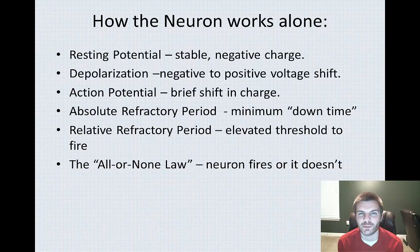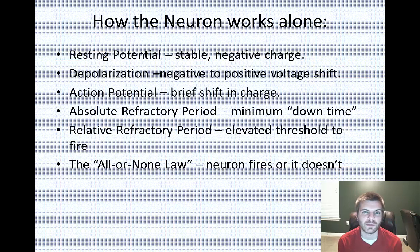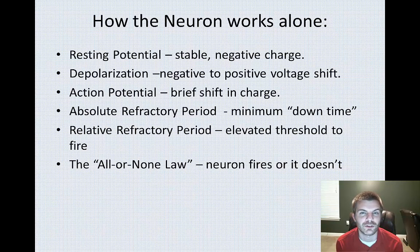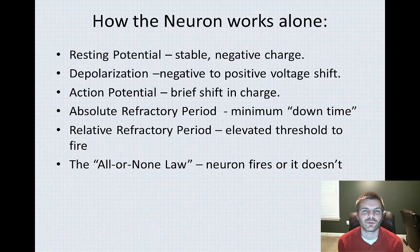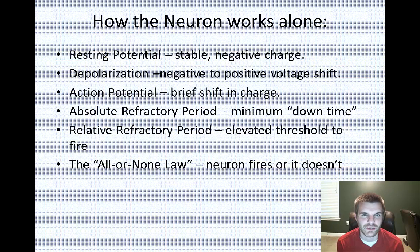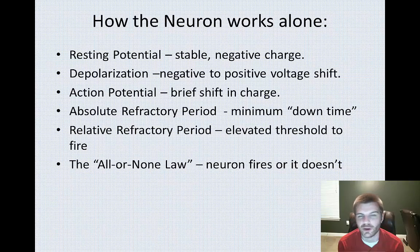In class I like to say: think about a series of dominoes lined up. If you knock over a set of dominoes and they all get knocked over, you can't knock them over again right away — you have to set them back up, and that takes time. Think of that as your downtime — that's the absolute refractory period, the minimum downtime before there can be another action potential. There's also the relative refractory period, where the threshold to fire has been raised, requiring more of a positive charge. Finally, the all-or-none law means either an action potential is created or it doesn't happen — your neuron either fires or the charge never builds up enough.